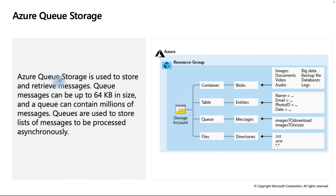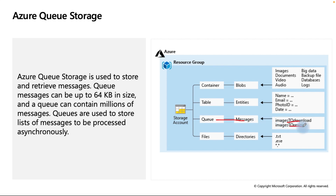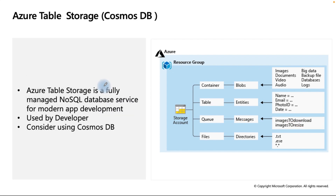Azure Queue Storage is used for storing and retrieving messages. Queue messages can be up to 64 KB in size and a queue can contain millions of messages. It's used to store lists of messages to be processed asynchronously, for example queuing image download and resize tasks.